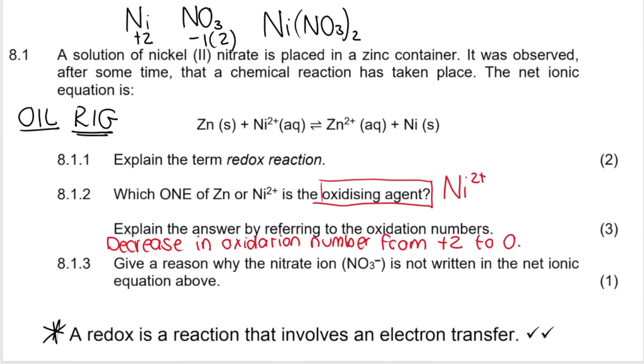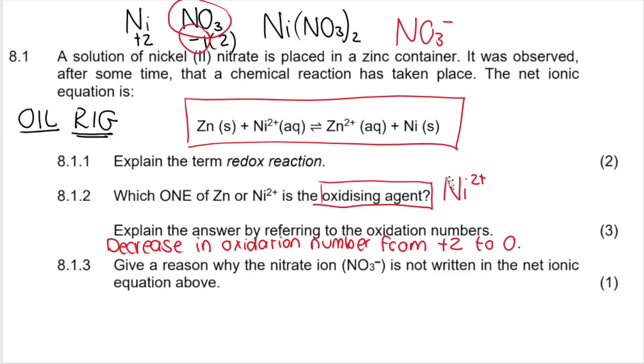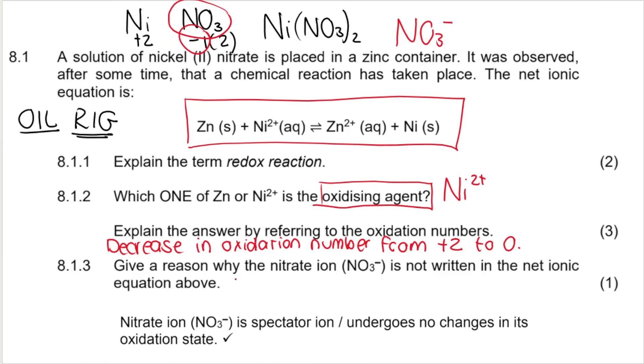Then 8.1.3, give a reason why the nitrate ion, remember we spoke about the solution of nickel nitrate and we spoke about the nitrate ion, NO3 with a charge of negative one, as mentioned over here. They say it's not written in the net ionic equation above. Why does it not feature here? The reason why is because the nitrate ion is what we call a spectator ion. And that means that the nitrate ion is neither oxidized nor is it reduced. It undergoes no change in its oxidation state, spectator ion.